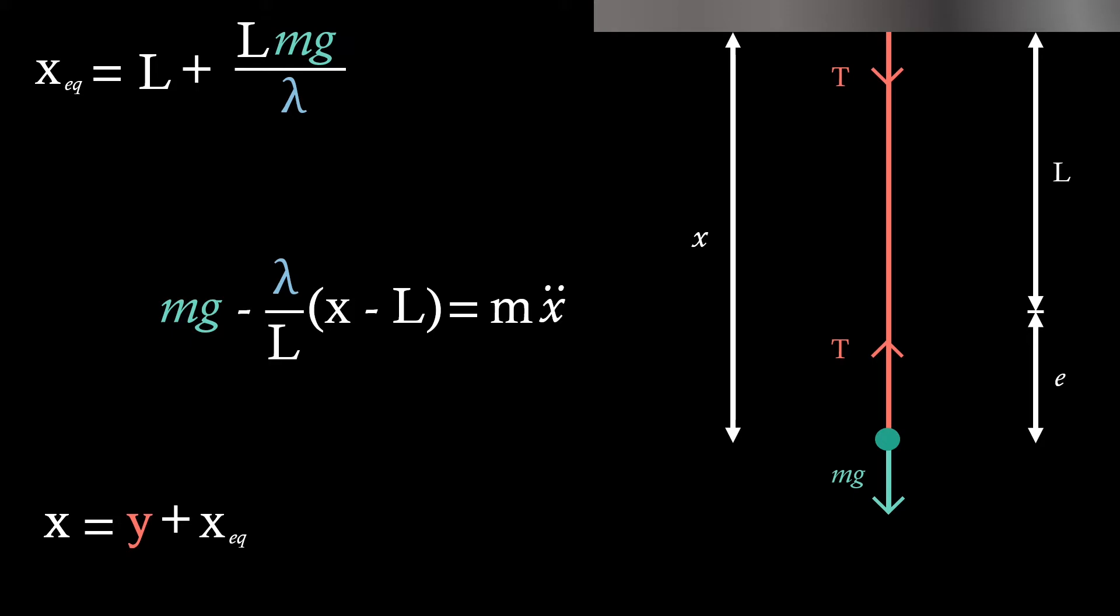And as we have an x double dot in our system, we need to differentiate. We see that x dot is just equal to y dot, and x double dot is equal to y double dot, as xEQ is just a constant, so it vanishes when we differentiate. So now we can substitute this into this main equation.